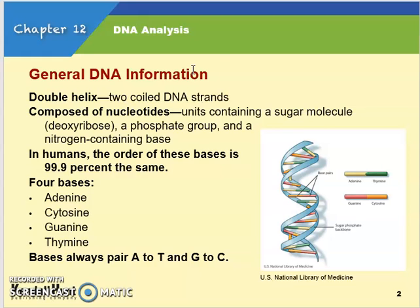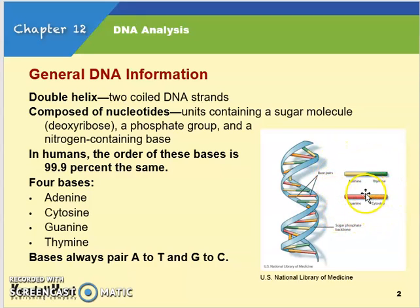When we talk about the bases, adenine always pairs with thymine and cytosine always pairs with guanine. In humans, the order of those bases is 99.9% the same — there's only 0.1% that's different between any two people. Think about all the differences between each person in our class, and that's represented by just 0.1% of your DNA.